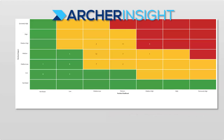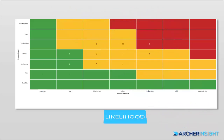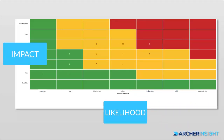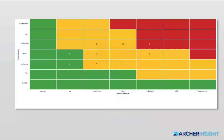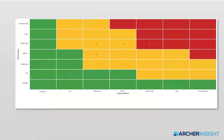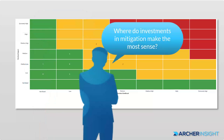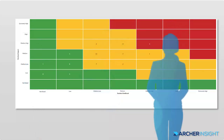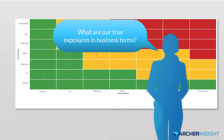Many organizations use heat maps and severity scores to understand the likelihood and impact of risk to the business. Though heat maps are a good start, qualitative stoplight assessments are too vague to articulate the true measure of an organization's risk. Likewise, these risks may not connect to business goals or strategic objectives, making these reports hard to use for decision makers.